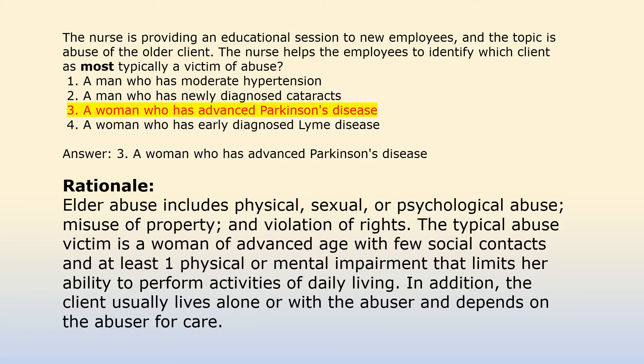Answer 3: A woman who has advanced Parkinson's disease. Elder abuse includes physical, sexual, or psychological abuse, misuse of property, and violation of rights. The typical abuse victim is a woman of advanced age with few social contacts and at least one physical or mental impairment that limits her ability to perform activities of daily living. The client usually lives alone or with the abuser and depends on the abuser for care.